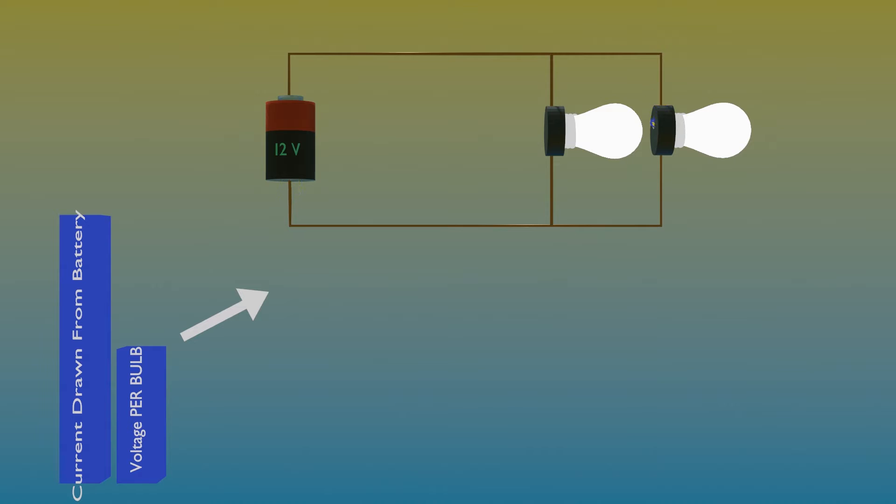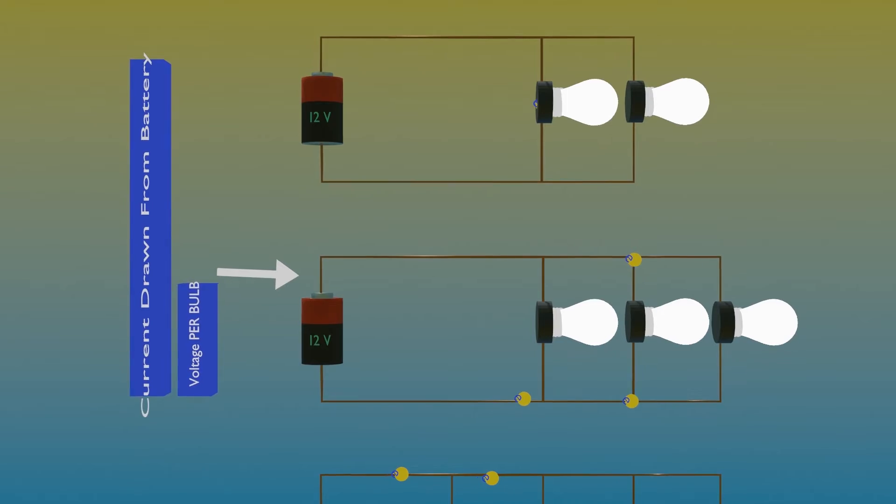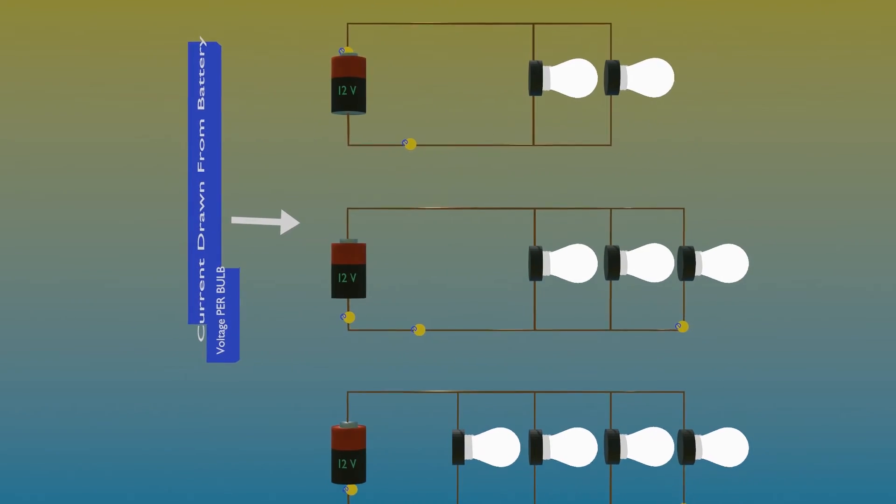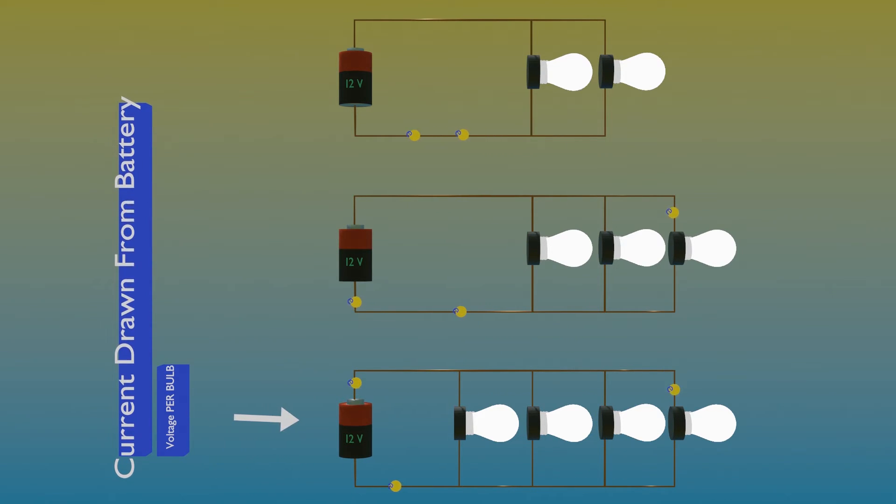No matter how many legs a parallel circuit has, the total current flowing from the voltage source is equal to the sum of currents along each leg. Both this rule and the fact that the battery's full voltage is applied across each leg of a parallel circuit are important to compare the circuits in this challenge.